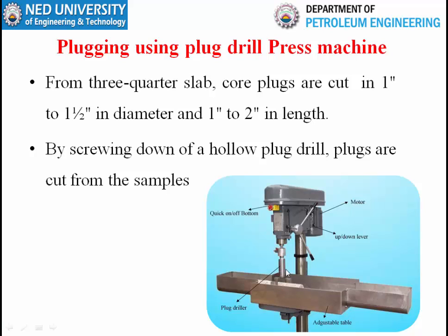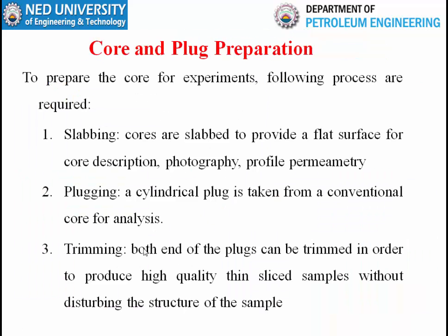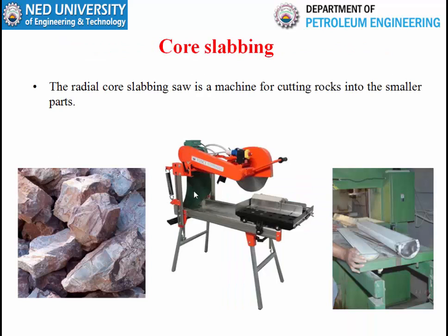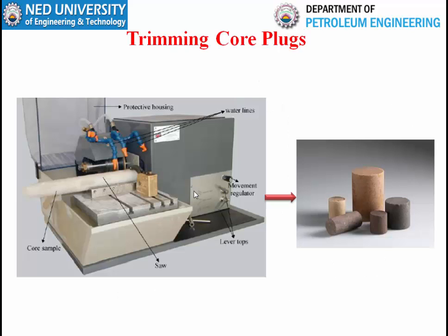Plugs are collected and sent to petrophysical labs for analysis of velocity and permeability using a hollow plug drill. A trimming machine trims the ends to produce high-quality thin slice samples. These facilities — trimming machine, plug machine, and core slabbing machine — are available in the petrophysical lab in the petroleum engineering department. After plugs are collected and trimmed, they are sent to the petrophysical lab for porosity and permeability analysis.